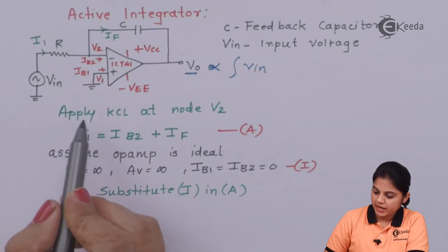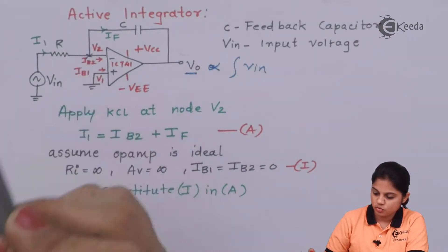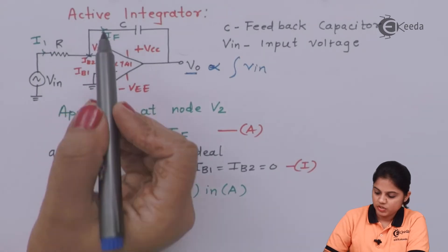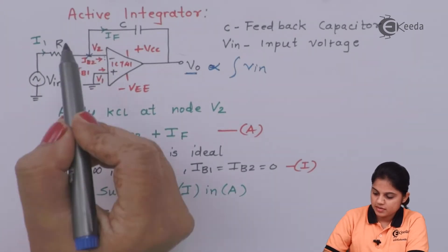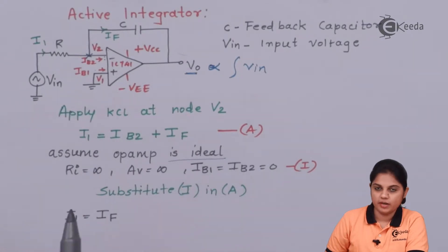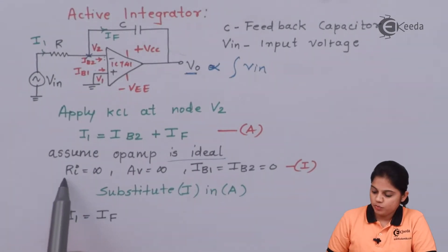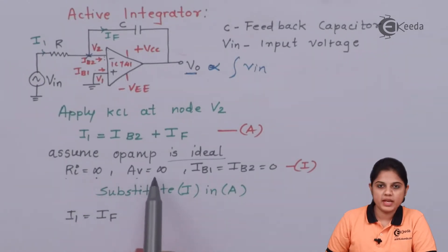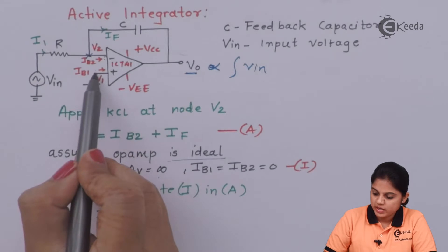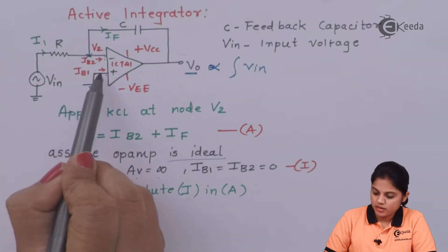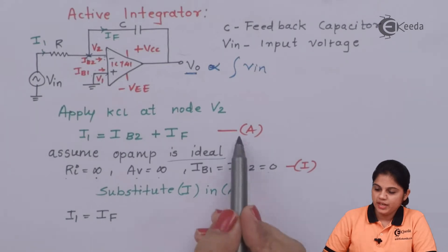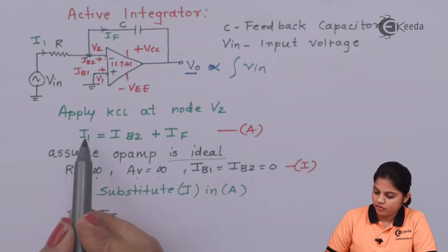So let's start with the expression. Applying KCL at node V2, the current flowing through this branch splits into two branches, so we can write: I1 = IB2 + IF, where IF is the current flowing through the capacitor. Now let's assume this op-amp is an ideal one. For an ideal op-amp, input resistance is infinite and open-loop gain is infinite, so there is no current flowing through the input branches. Therefore IB1 = 0 and IB2 = 0. Substituting IB2 = 0 gives us I1 = IF.